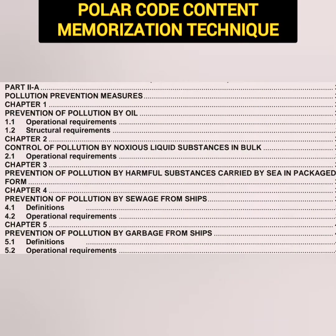Now let's talk about Part 2A, which is the pollution prevention measures. When we talk about pollution prevention, what comes to mind? MARPOL. There are five chapters, and there are five prominent annexes of MARPOL, and all these chapters coincide with the annexes. Chapter 1 is prevention of pollution by oil, just like MARPOL Annex 1. Chapter 2 deals with control of pollution by noxious liquid substances in bulk, just like Annex 2. Chapter 3 is prevention of pollution by harmful substances carried by sea in packaged form, just like Annex 3. Chapter 4 deals with prevention of pollution by sewage from ships, just like Annex 4. And Chapter 5 deals with prevention of pollution by garbage from ships, just like Annex 5.